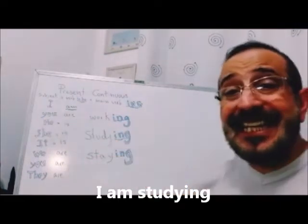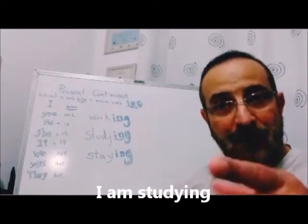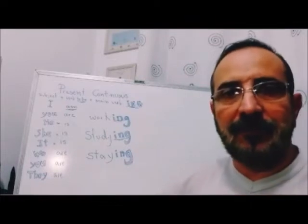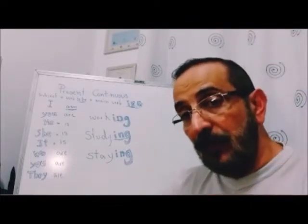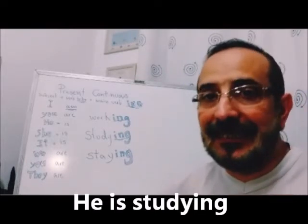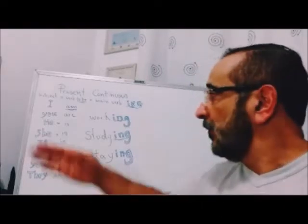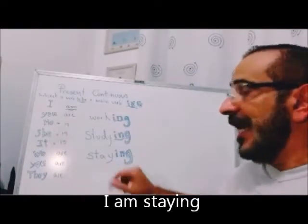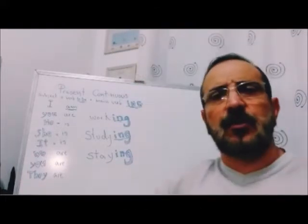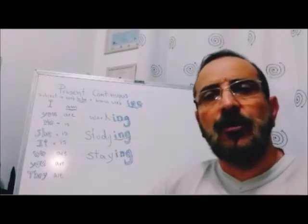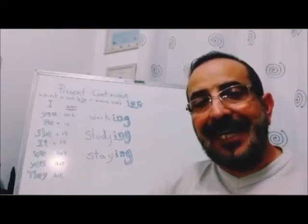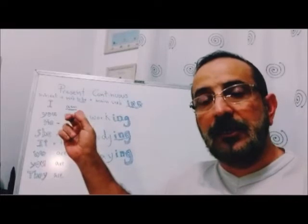Outro exemplo: I am studying. You are studying. Eu estou estudando, você está estudando. Lembrando que no português você não diz 'ele estudando' — você diz 'ele está estudando'. No inglês é a mesma coisa: He is studying. Então tem que colocar o verbo to be. I am staying — eu estou ficando. I am staying in a hotel this week — estou parando em um hotel essa semana. Sempre que eu quero expressar uma ação que está em andamento, eu vou usar o present continuous.